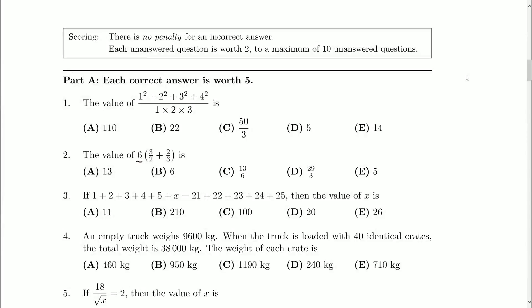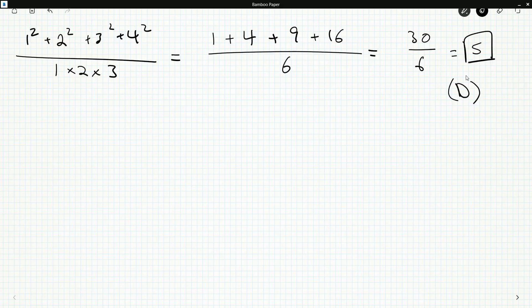The value of six times, and then in brackets, we've got three halves plus two thirds is. Now, as I've mentioned in the last video, you can just grab your calculator and do this. It's a very simple arithmetic question, just like the last one.